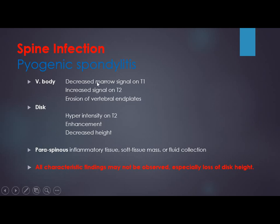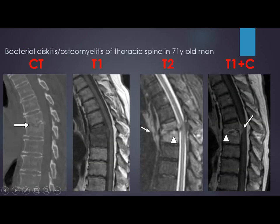Spine infection, whether pyogenic or TB, shows changes in the vertebral body: decreased marrow signal on T1, increased signal on T2, and erosion of the endplates. In the disc there is hyperintensity, enhancement, and decreased height — though this is not always the case, sometimes the disc may be normal. There may be paraspinous inflammatory tissue and fluid collection. This CT scan in spondylodiscitis shows erosion with decreased disc height. On T1 we see low signal of the vertebrae; on T2 they are highlighted. With contrast, there is enhancement of the disc endplate and adjacent soft tissue, with an epidural component.